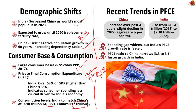Regarding recent trends: China's PFCE saw a marked increase over the past few years despite stagnation in 2020 due to the pandemic. India's PFCE rose from $1.64 trillion in 2018 to $2.10 trillion in 2022, while China's PFCE slightly declined in 2022. The spending gap between the two countries widened from $3.8 trillion in 2018 to over $4.5 trillion in 2022. Importantly, India's PFCE ratio to China's narrowed from approximately 3.3 to 3.1, indicating faster growth in India's consumer spending.